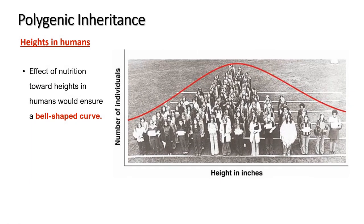This diagram shows a normal distribution bell-shaped curve for heights in humans.